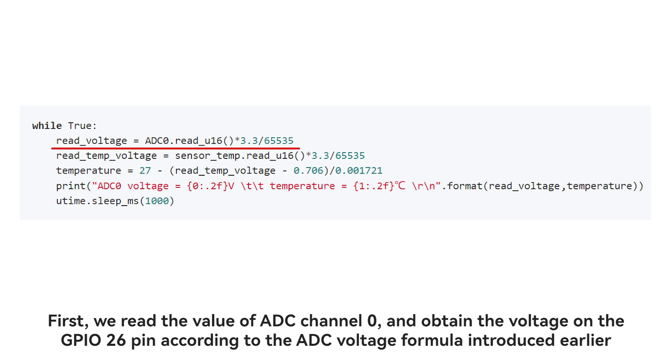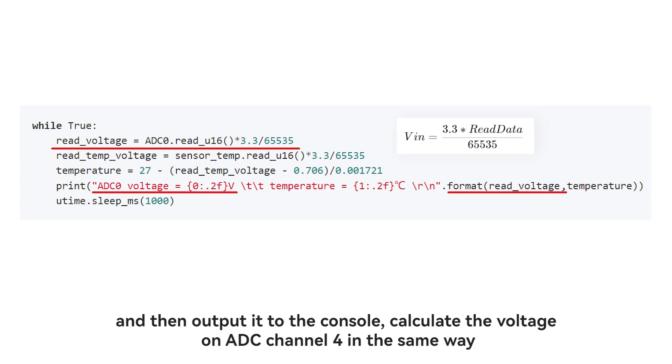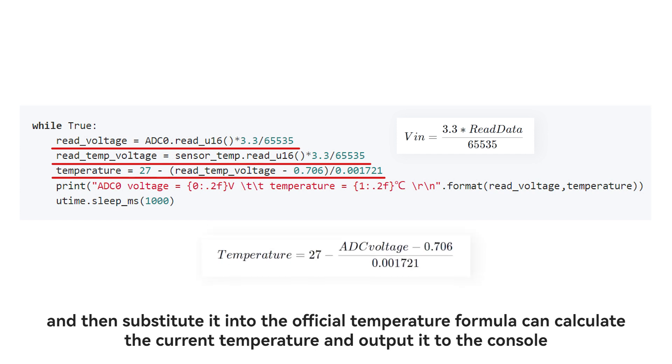Then we can see the while infinite loop. First, we read the value of ADC channel 0, and obtain the voltage on the GPIO 26 pin according to the ADC voltage formula introduced earlier, and then output it to the console. Calculate the voltage on ADC channel 4 in the same way, and then substitute it into the official temperature formula to calculate the current temperature and output it to the console.